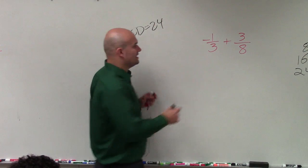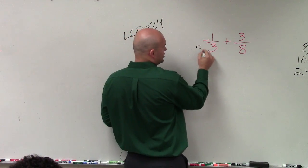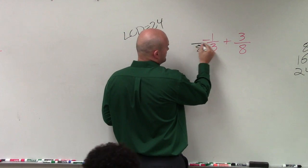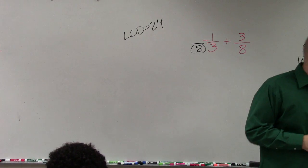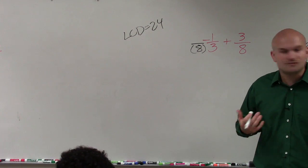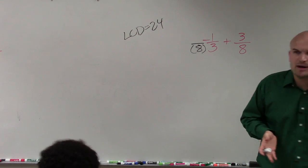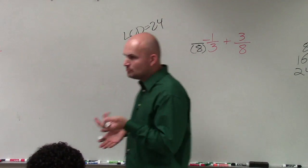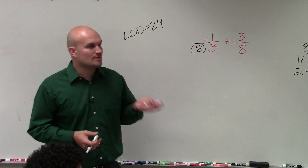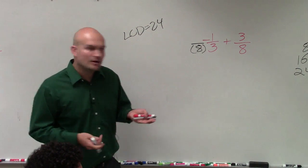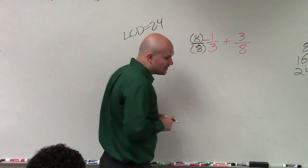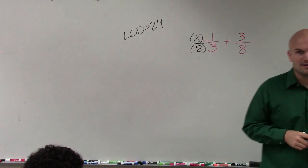Well, to get 3, forget about the negative sign for a second. To get 3, we need to multiply by 8. But there's a problem. If you have a fraction and you only multiply the denominator, you've now changed the fraction. Think about 1 half. If you have 1 half and you multiply the denominator by 3, you now have 1 sixth. Is 1 sixth equal to 1 half? No. So we need to multiply the numerator and the denominator by 8.